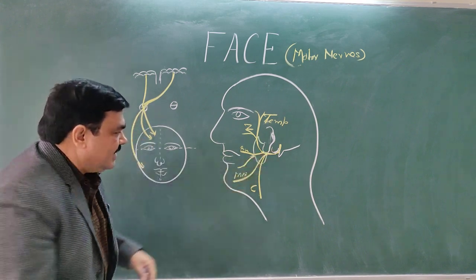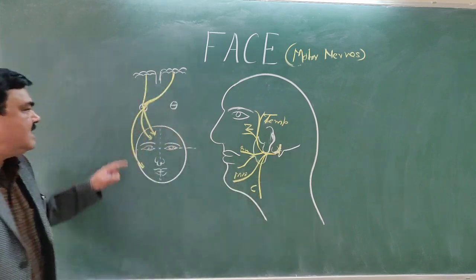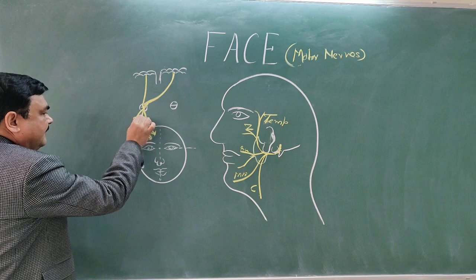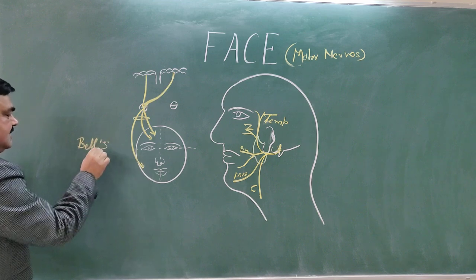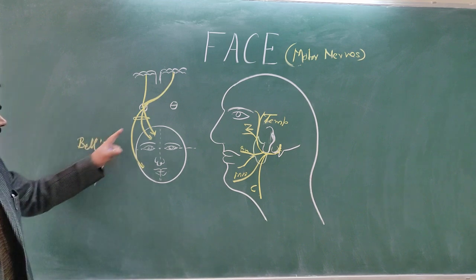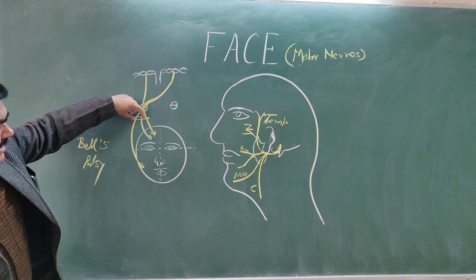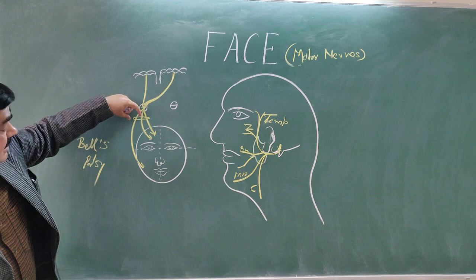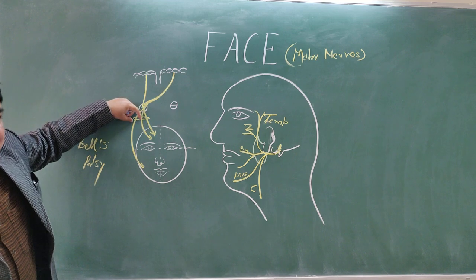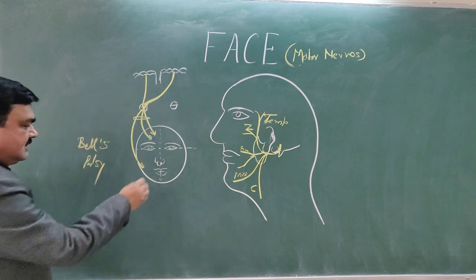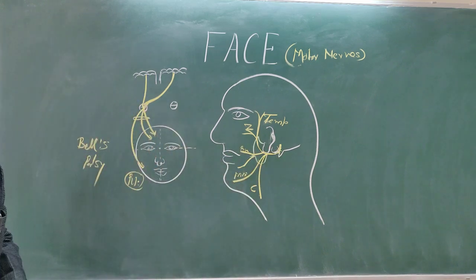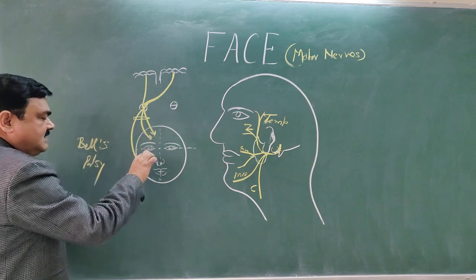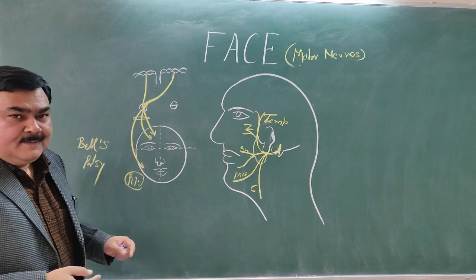If the lesion region is below the nucleus, this region is known as Bell's palsy — this is the lower motor neuron region. This is the side of the lesion. In this case, on the right side, the right side of the face is paralyzed. The muscles on this part of the patient's face become inactive.